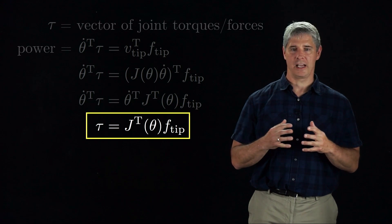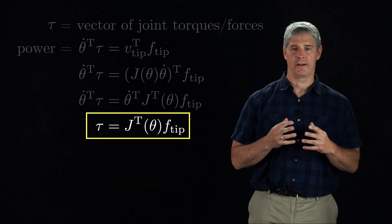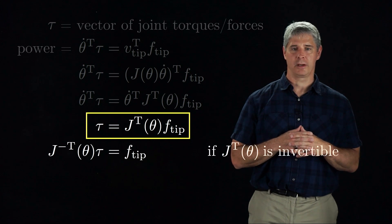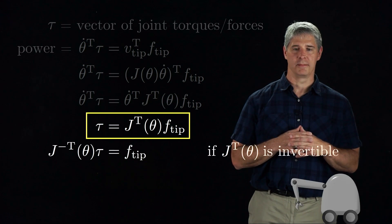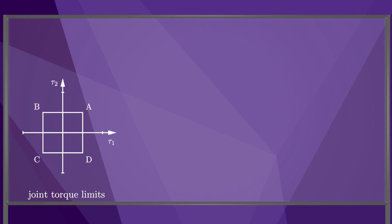In the case that j transpose is invertible, we also have the relationship f-tip equals j transpose inverse times tau. Assuming j transpose is invertible, we can map joint torque limits to tip force limits using the inverse of Jacobian transpose, similar to how we map joint velocity limits to tip velocity limits.